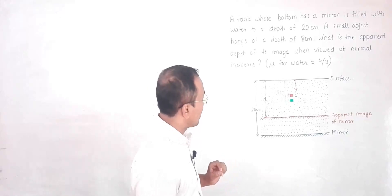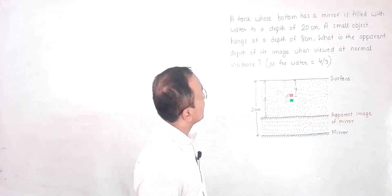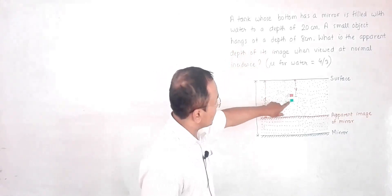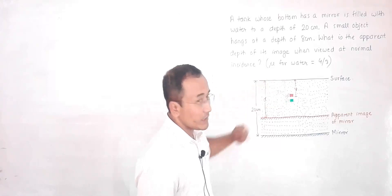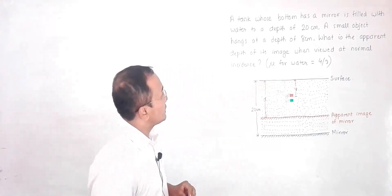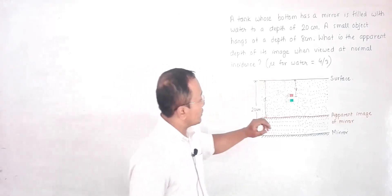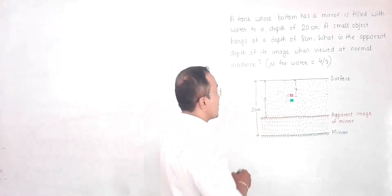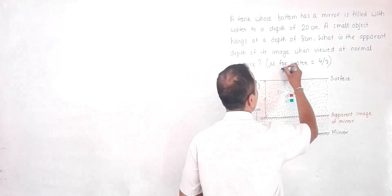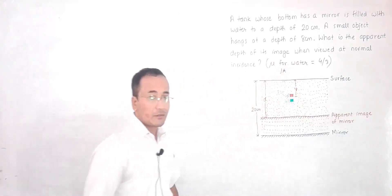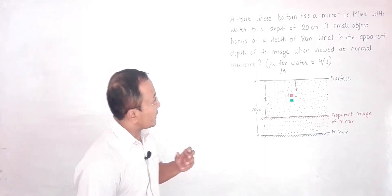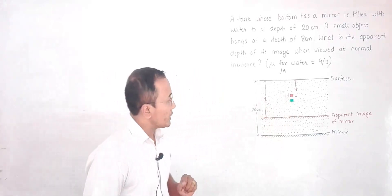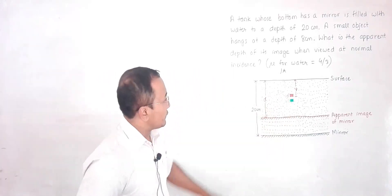We have a tank whose bottom has a mirror, filled with water to a depth of 20 centimeters. So the mirror is at a depth of 20 centimeters. A small rectangular object hangs at a depth of 8 centimeters. We have to find the apparent depth of its image when viewed at normal incidence — that is, from the position of the eye above the surface.